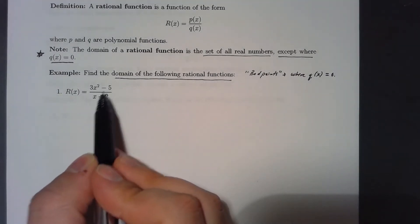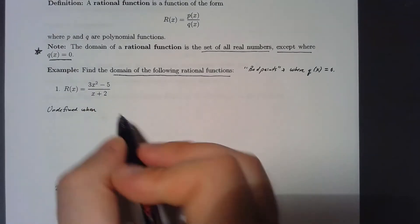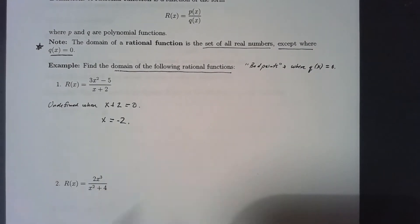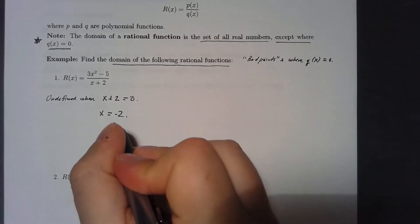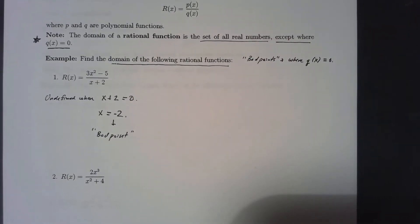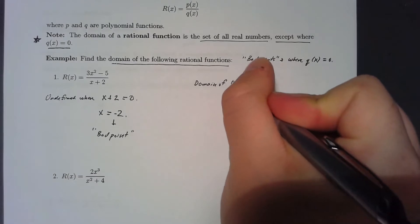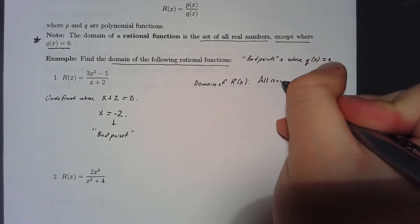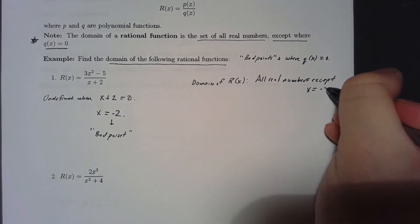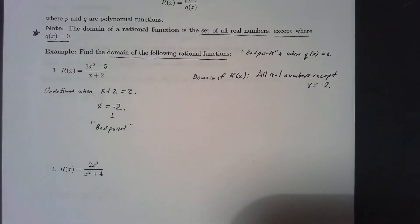Looking at this rational function — (3x² - 5) / (x + 2) — it is undefined when the denominator equals zero, so set x + 2 = 0. Solving that gives x = -2, so x = -2 is a bad point and the only bad point. The domain is all real numbers except x = -2.